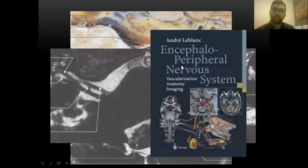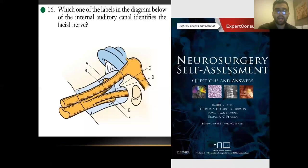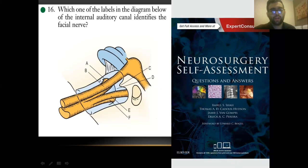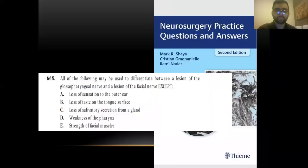Now a self-assessment section. First question: which diagram shows the facial nerve inside the internal auditory canal? Answer B — because the facial nerve is superior and anterior. Second question: all of the following can be used to differentiate between the glossopharyngeal and facial nerve except one. The answer is loss of sensation to the outer ear, because both nerves share pain and temperature sensation via the spinal nucleus of the trigeminal nerve, so this cannot differentiate them.